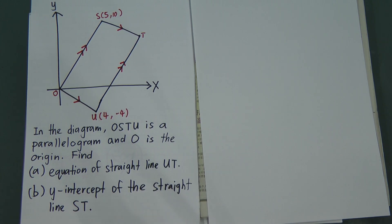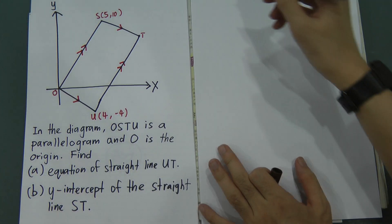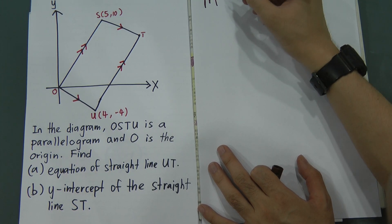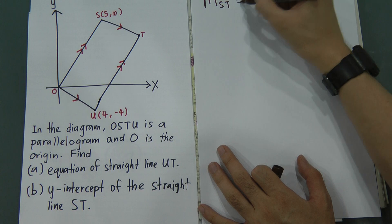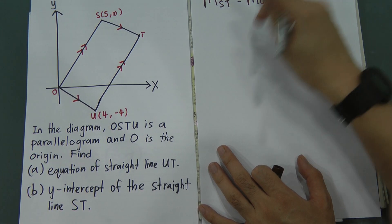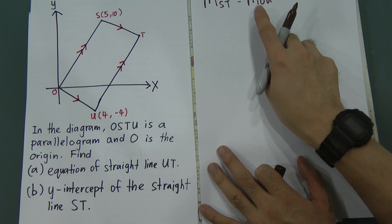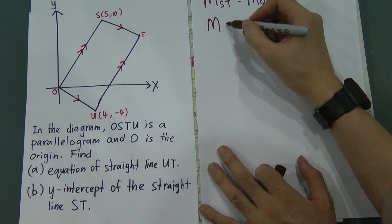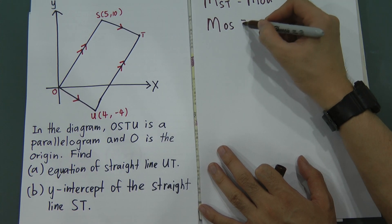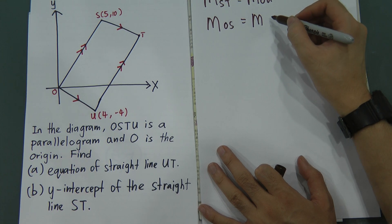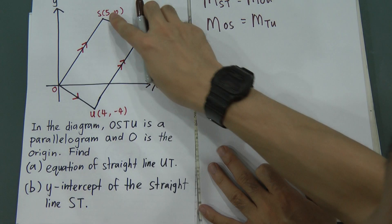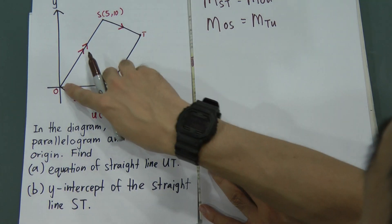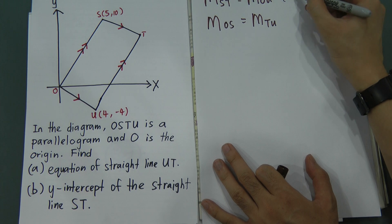Parallel lines in straight line will always mean they have the same gradient. Since they are parallel, the gradient for S-T will be the same as the gradient for O-U. I will use M to represent gradients. And the gradient for O-S will be the same as the gradient for T-U. This gradient will equal this gradient and this gradient will equal this gradient because they are parallel.